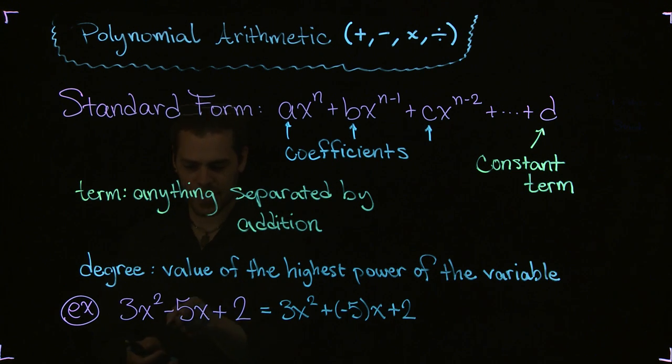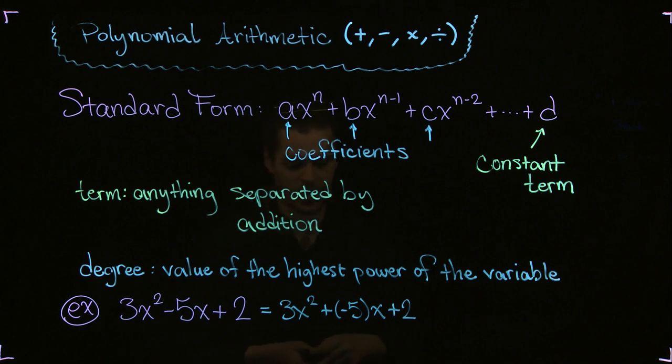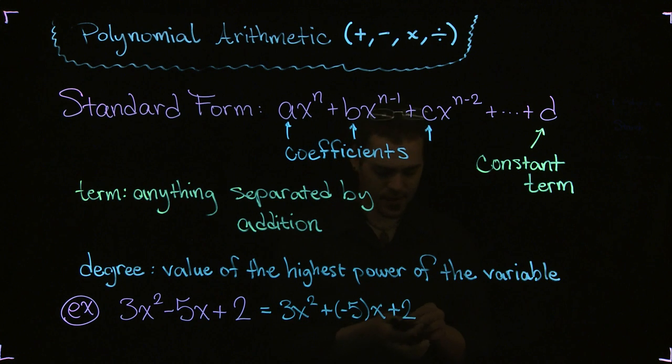Three terms, coefficient is -5, the degree is 2, which is the highest power there. Let me just write down those few things for this example: the degree is 2.